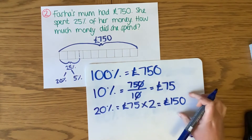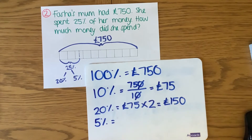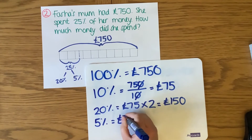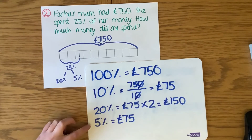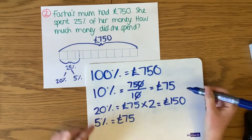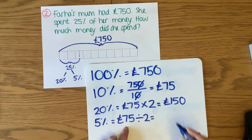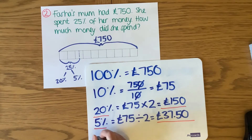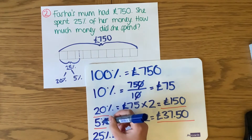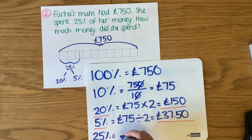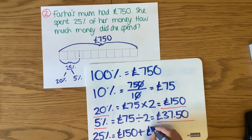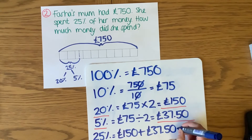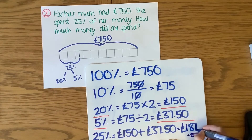Next I need to work out what 5% is. If I know that 10% is £75, I think: what do I do to 10 to get to 5? I half it — divide by 2. So I do 75 divided by 2, which is £37.50. Now I've got my 20% and my 5%. To work out 25%, just as 20 add 5 gives me 25%, I need to add these two amounts together: £150 add £37.50 gives me £187.50. So she spent £187.50.